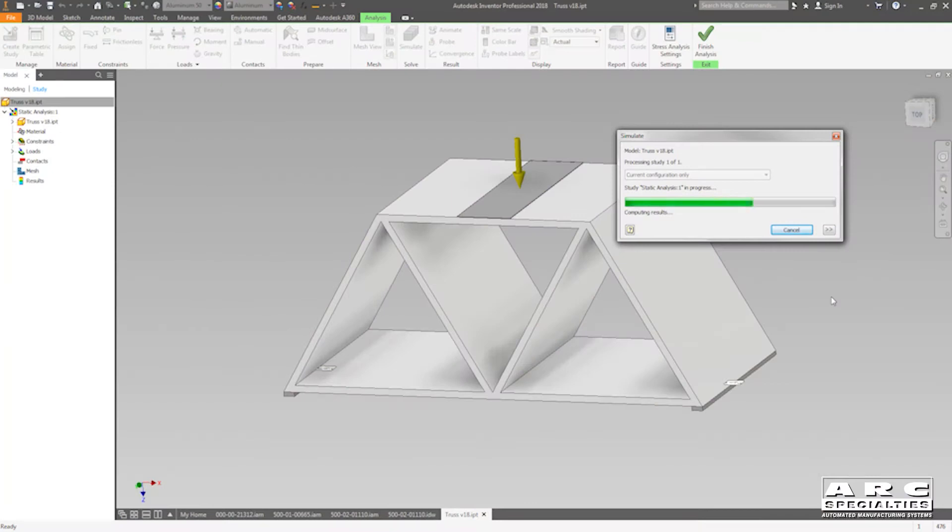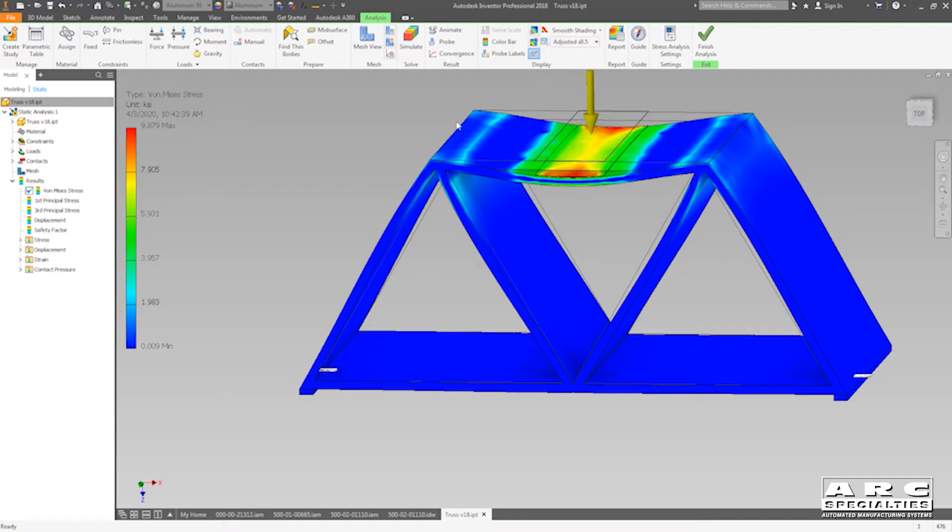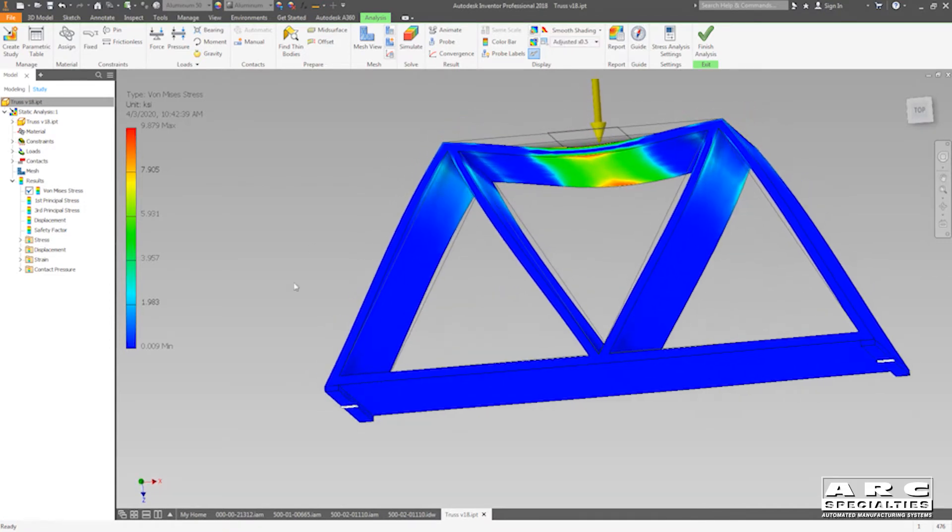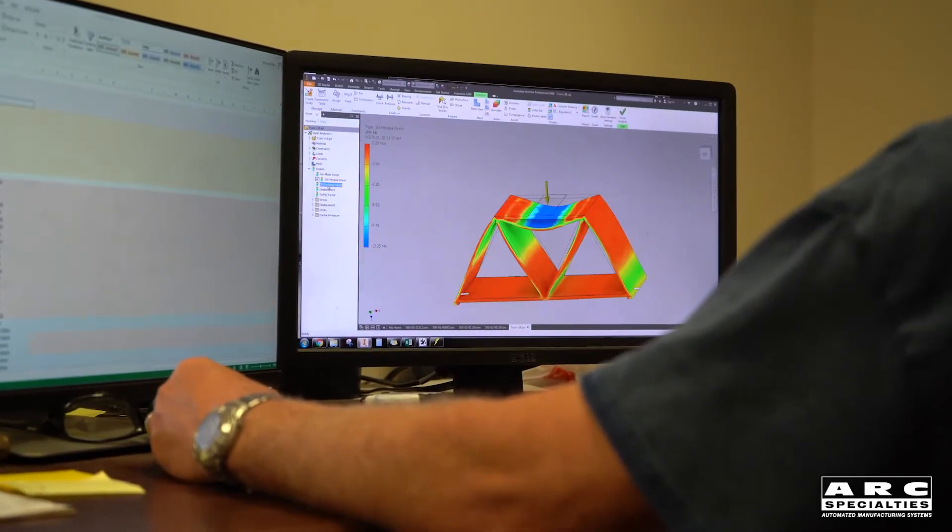Mike's using the finite element analysis to apply a virtual load to a virtual part. You can tell the high stress areas by the color. He's exaggerated the distortion here. Obviously, this isn't an optimized design, but it will suit our purposes.